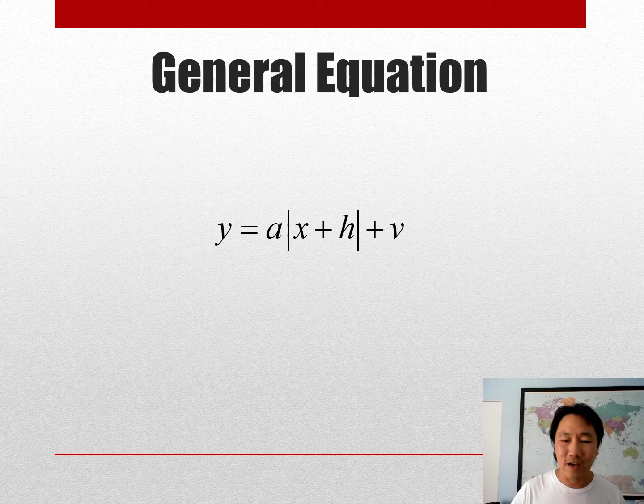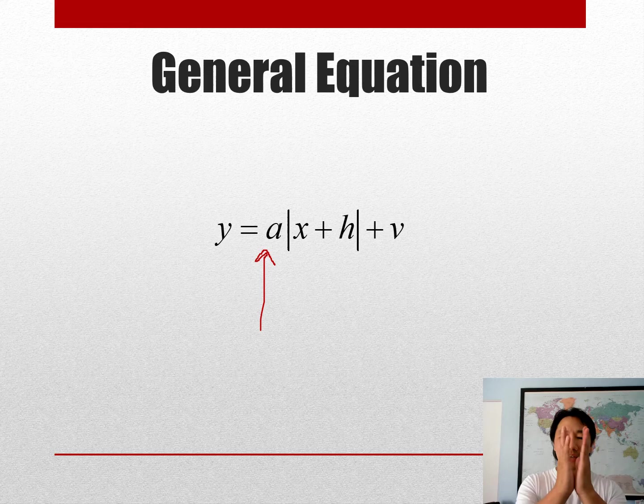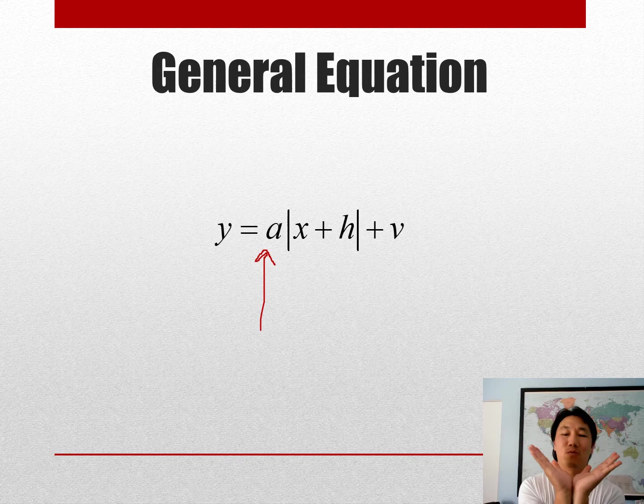All right now, let's go ahead and move it around. Here's the general equation of the absolute value we learned in the last lesson where the a, the number that you multiply in the front, does something to the graph. It actually makes it skinny or wide. Remember when the a is a nice big whole number it actually makes it skinny, and when the number is like a small fraction that's less than one, then it makes it wide.